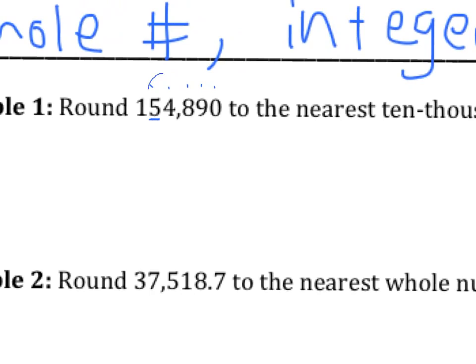We draw an arrow next door — an arrow to the number just to the right of it. We ask that number, the one we just drew the arrow to: are you bigger than four? If the number says yes — let's look at this one. Is four bigger than four? The answer is no, it's not. It's the same, but it's not bigger. So if the number says yes, then add one more. If the number says no, then it don't grow. The number that we underline is the one we're changing — it either grows or it doesn't grow.